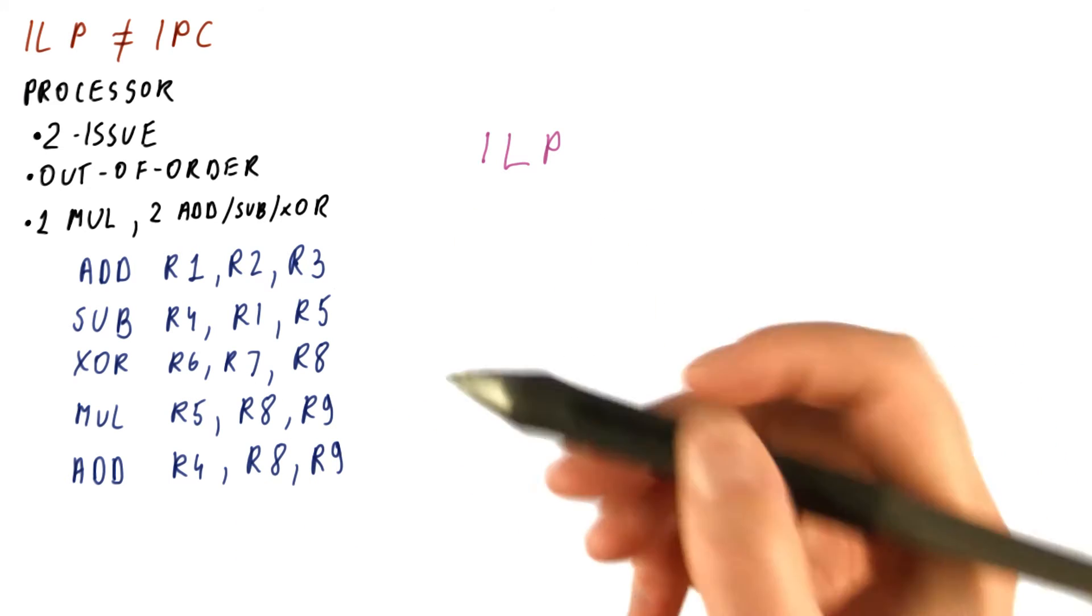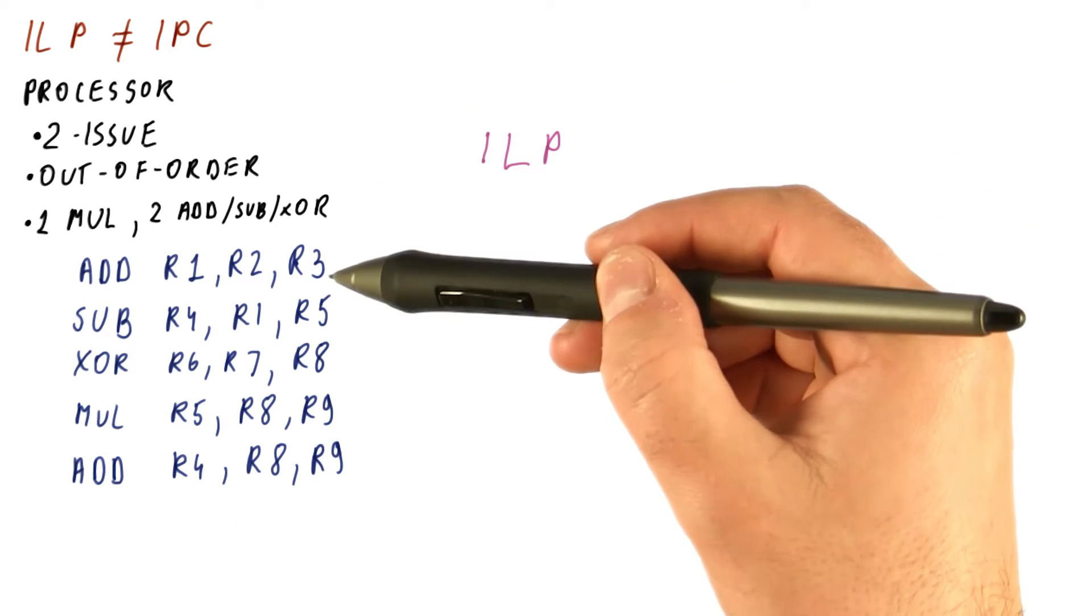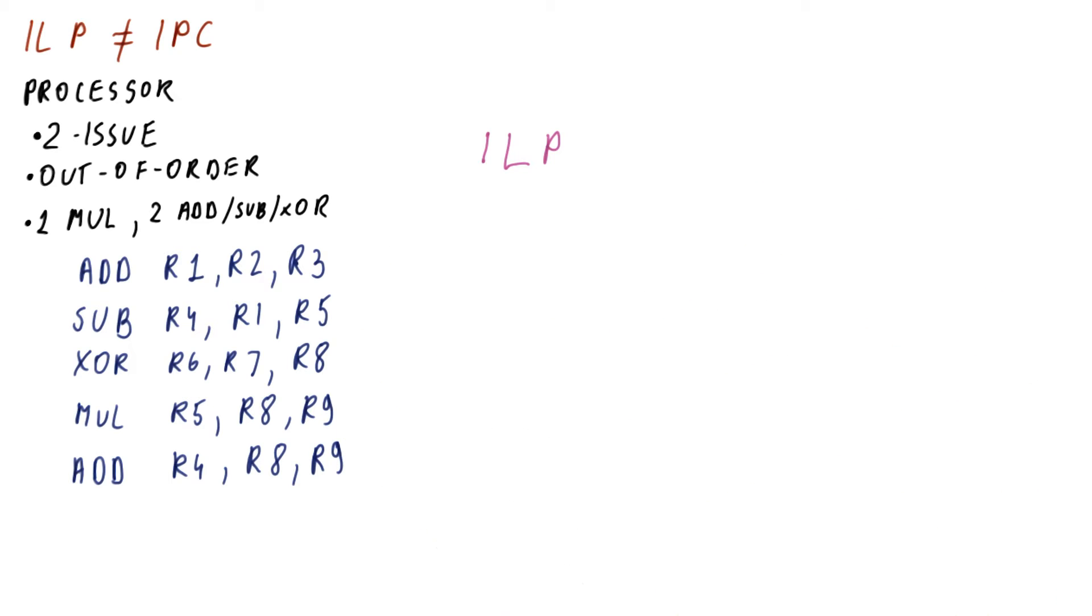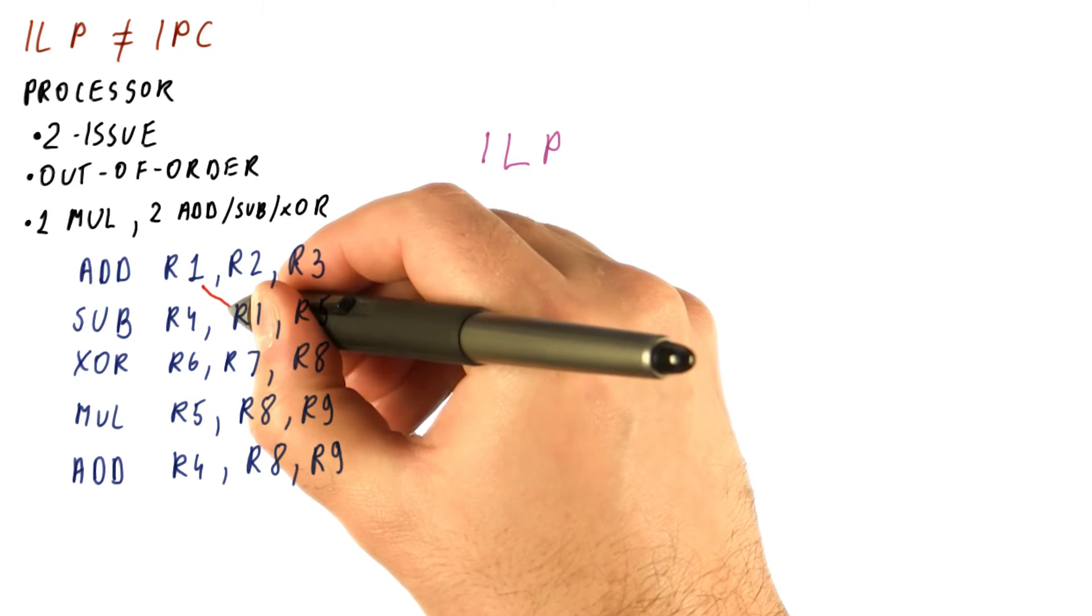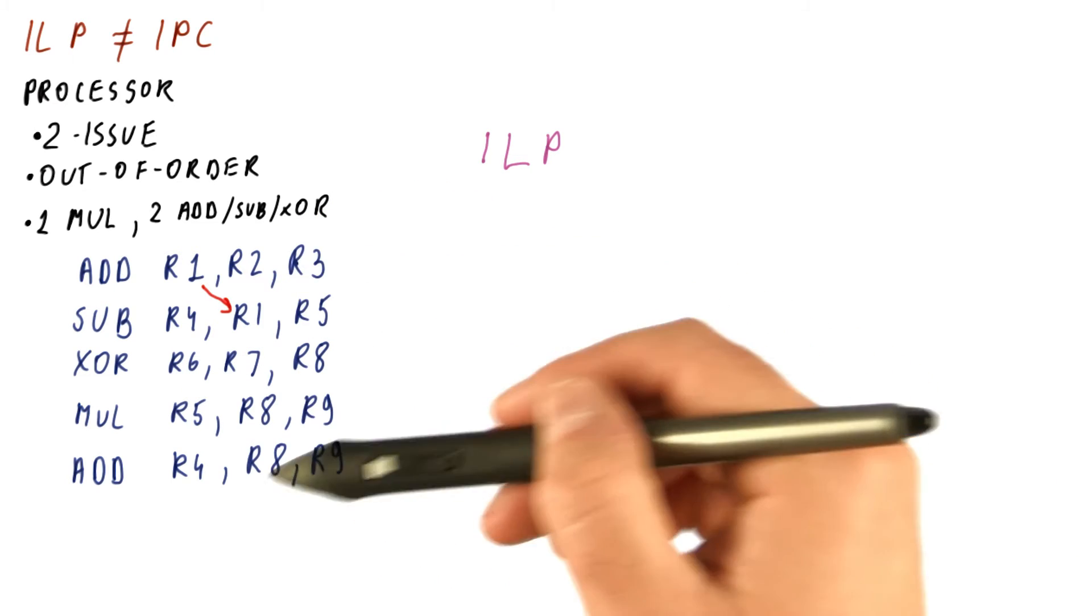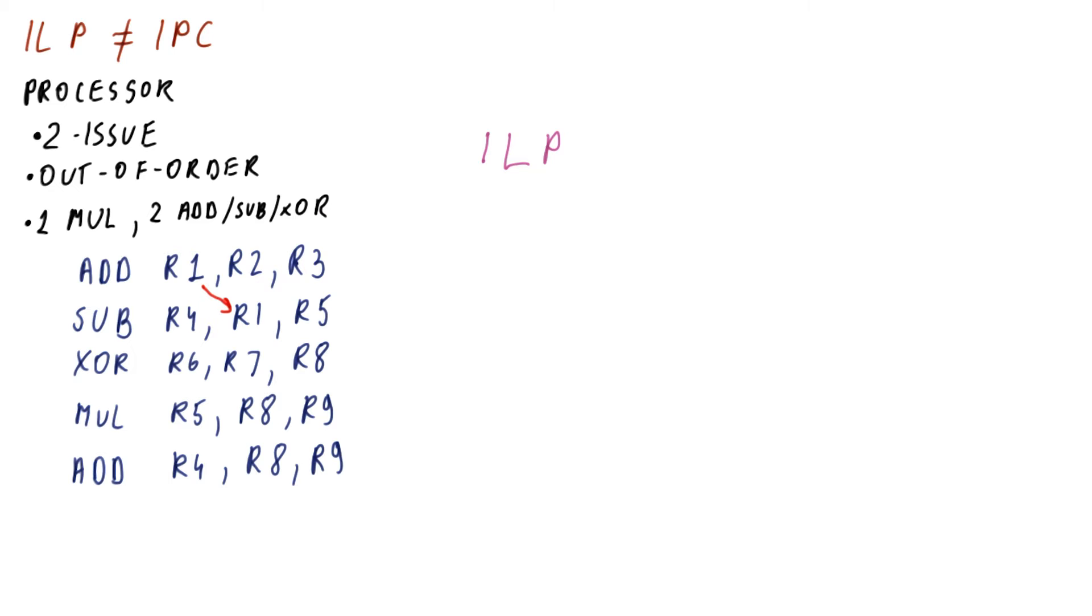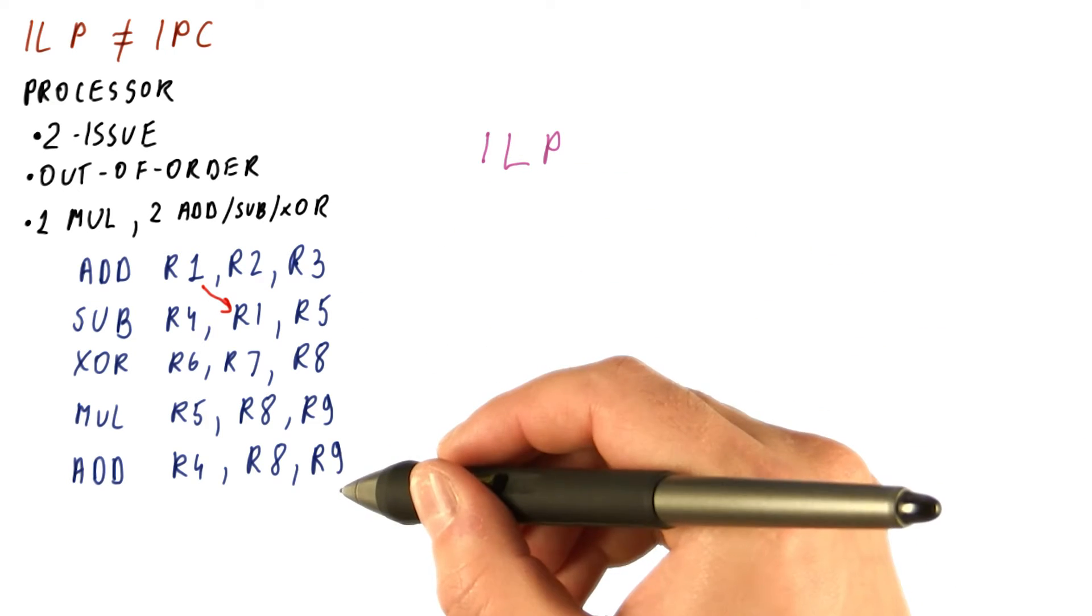For our ILP, we can just ignore all of this because the ILP, again, is just the property of a program. So we have to just obey dependencies. There is a data dependence here, and that's only really the only dependence that we have. So as far as ILP is concerned, we can do this in two cycles.